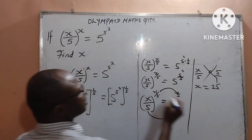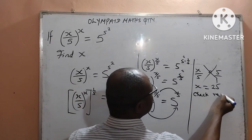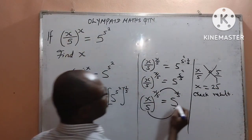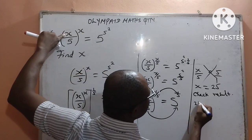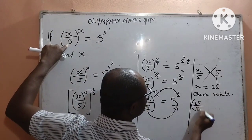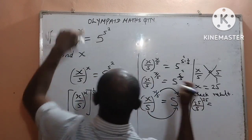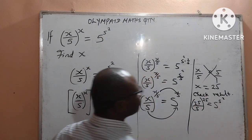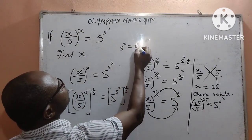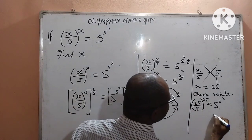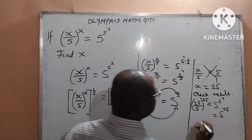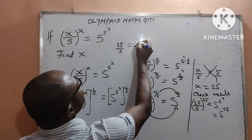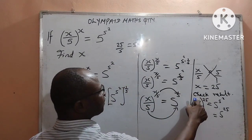Let's check the result. I will substitute x equal to 25 into the question. That gives me 25 over 5, raised to the power of 25. Is it equal to the right-hand side, which is 5 to the power of 5 to the power of 2? Now, 5 to the power of 2 is equal to 25, which means the right-hand side becomes 5 to the power of 25. And on the left, 25 divided by 5 gives 5, so we have 5 to the power of 25.